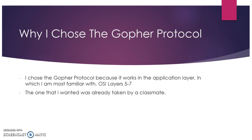To get started, why I chose the Gopher Protocol: I chose it because it works in the application layer. In the OSI model, that is layers 5 through 7. I like that layer because a lot of different protocols I like, like DNS and HTTP, are there. WWW — World Wide Web — was actually the one I wanted to take, but on the discussion board where everybody chose their topic, I was a little late. However, if I wouldn't have been, I wouldn't have been able to explore the Gopher Protocol and probably wouldn't have known anything about it.